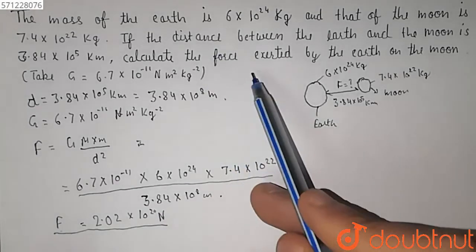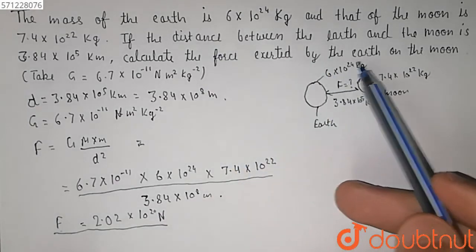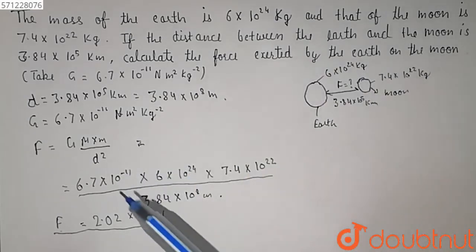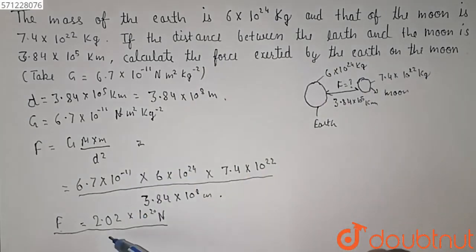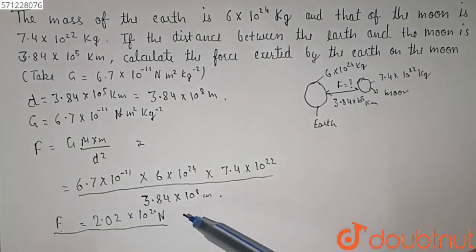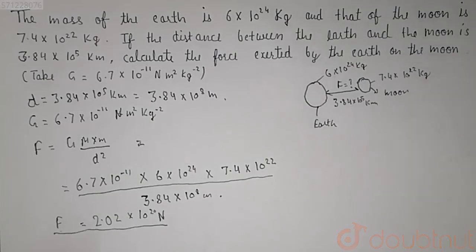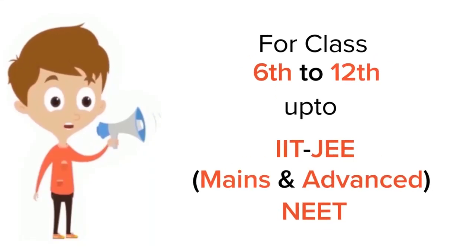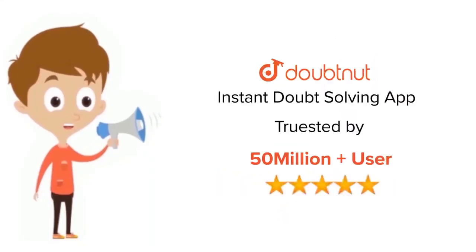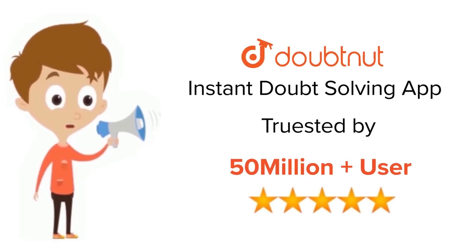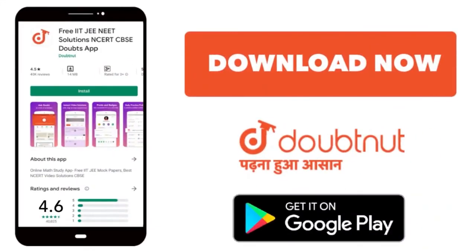So the force exerted by the Earth on the Moon is equal to 2.02 x 10 raised to power 20 newtons, which is the answer asked in the question. Hope you understand the concept. Thank you. For class 6-12, IIT JEE and NEET level, trusted by more than 5 crore students — download the Doubtnut app today.